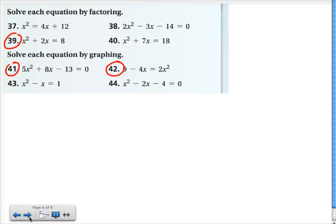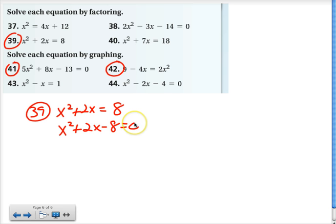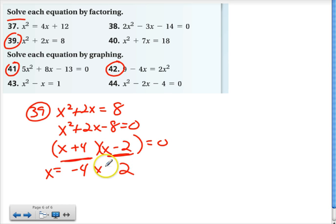Number 39, solve each equation by factoring. We have x squared plus 2x equals 8. The first problem is that we need to have a 0, because remember when we're solving, whenever they say solve, we're finding the 0s. And I look at this one. There's no common monomial factor. Negative 8 is not a perfect square. So I find two numbers that multiply to negative 8 and add to 2. That's going to be positive 4 and negative 2. And then to make this set of parentheses 0, we would need a negative 4. And to make this set of parentheses 0, we would need a positive 2. So the 0s are x equals negative 4 and x equals 2.